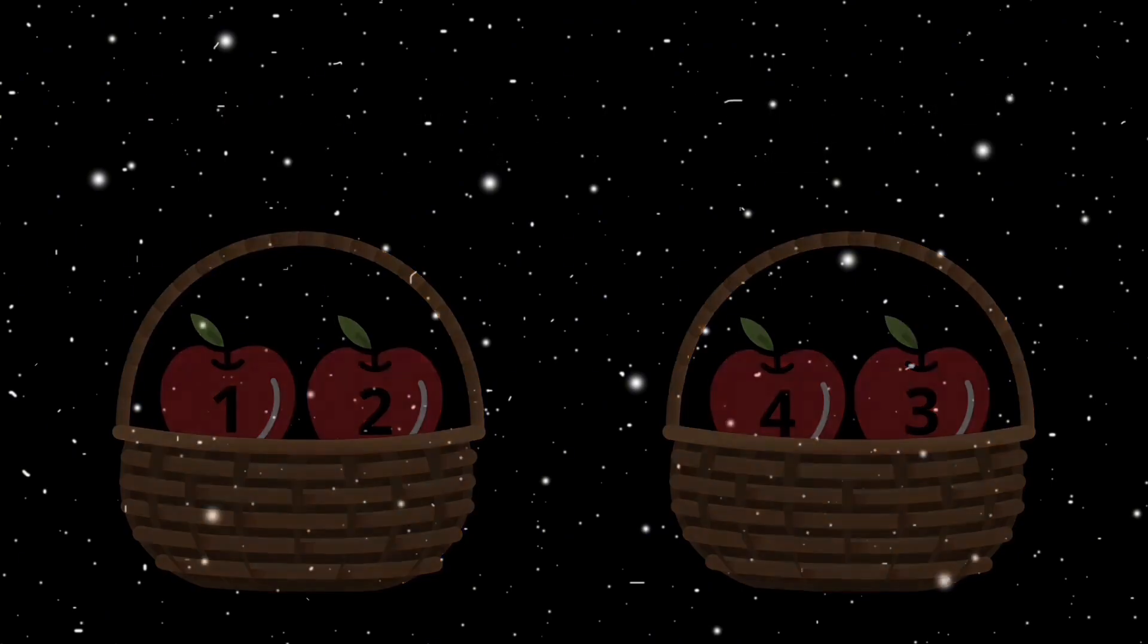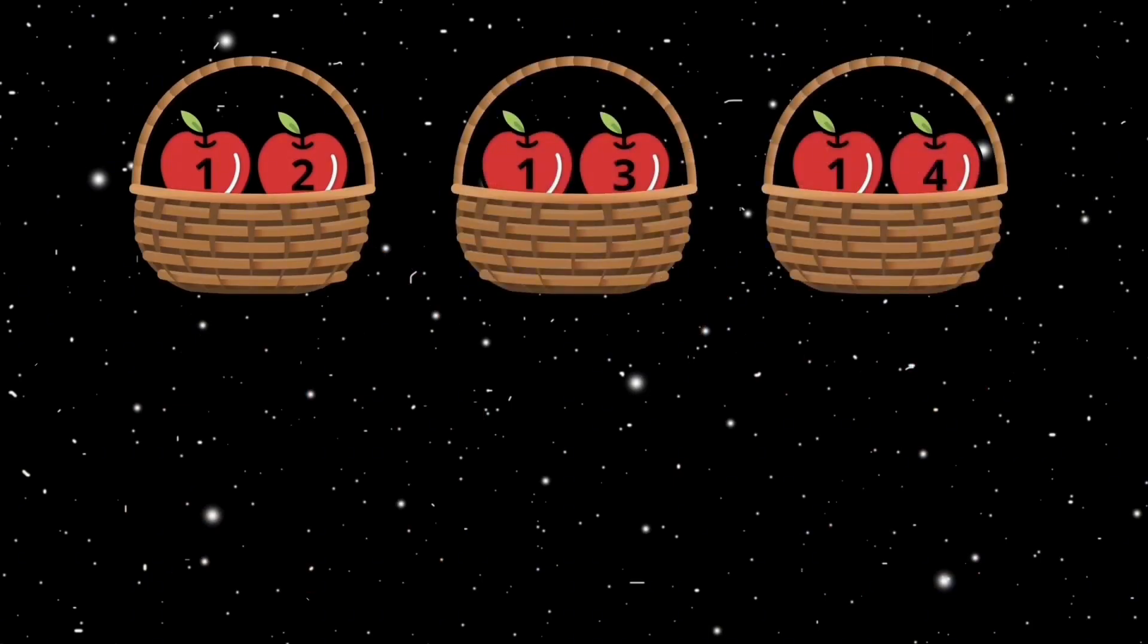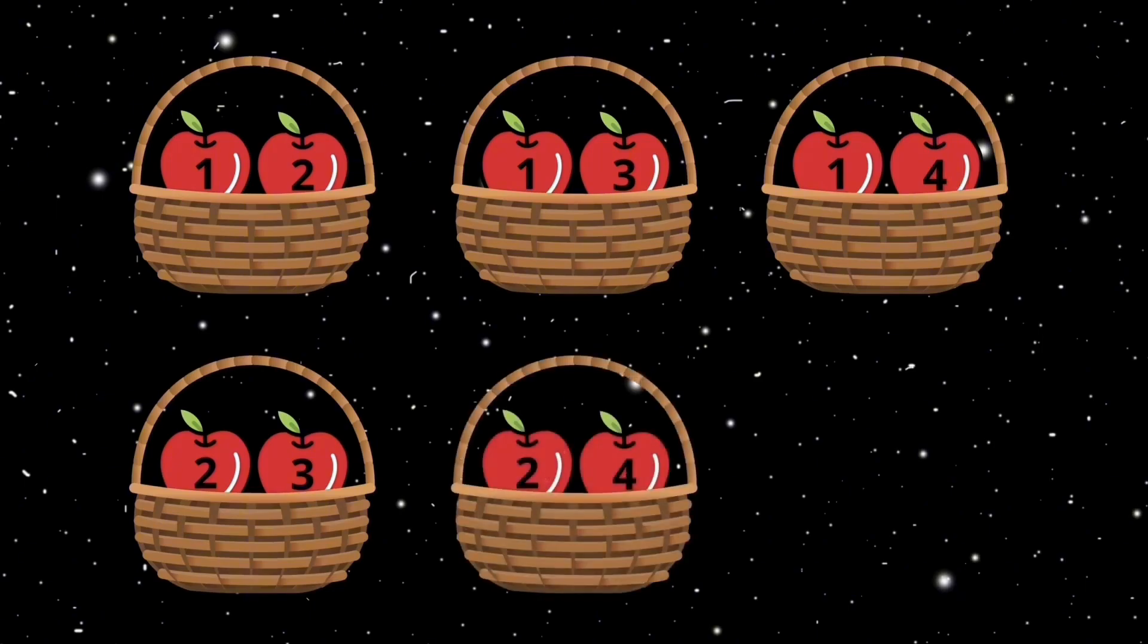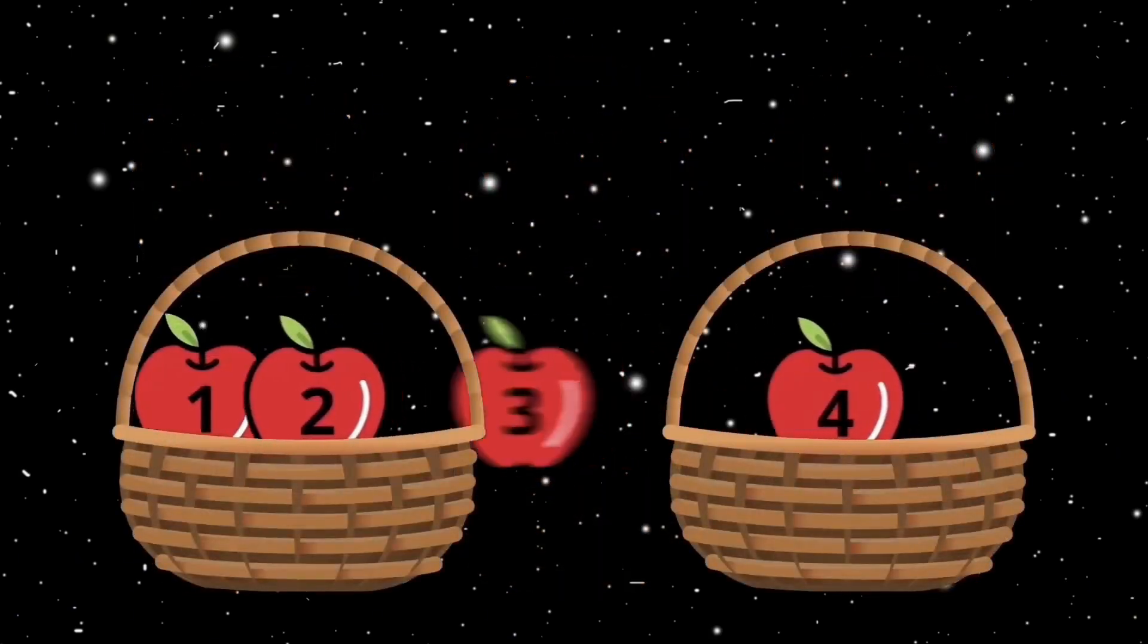If you place apples 1, 2, or 1, 3, or 1, 4, or 2, 3, or 2, 4, or 3, 4 in one basket, you'll get six total ways to arrange the apples in that basket. If you place three apples in one basket, and one apple in the other, you'll get four total ways to arrange the apples in that basket. The equal distribution of apples amongst the baskets gives us more ways to arrange these apples.